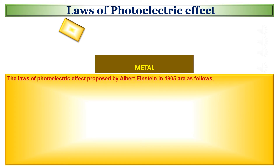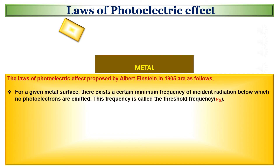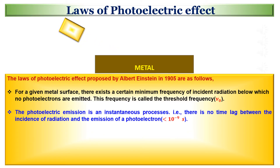The laws of photoelectric effect proposed by Albert Einstein in 1905 are as follows. For a given metal surface, there exists a certain minimum frequency of incident radiation below which no photoelectrons are emitted. This frequency is called the threshold frequency. The photoelectric emission is an instantaneous process, meaning there is no time lag between the incidence of radiation and the emission of a photoelectron.